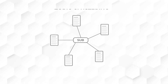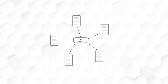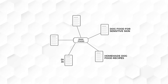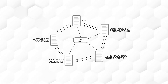If we look deeper into the category, this is basically what we call topic clustering, where you group content that supports one main topic. For example, if the main topic or category is about dog food, you could have content about dog food for sensitive skin, homemade dog food recipes, dog food allergies, wet versus dry dog food, etc. All these contents have internal links between each of them and they all support the main topic, which is dog food. This is the classic example of topic clustering.